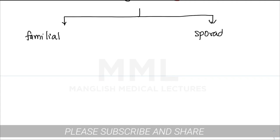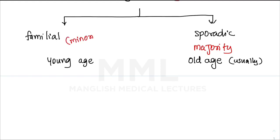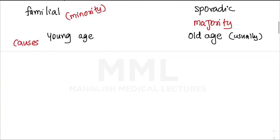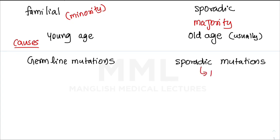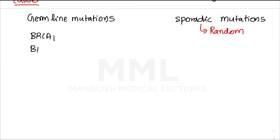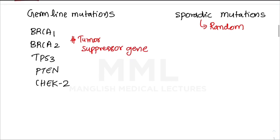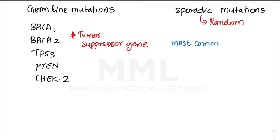The causes of breast cancer can be divided into two: familial and sporadic. Sporadic cases are the majority and usually present in older age, while familial cases present at a younger age and are a minority. Sporadic cases involve random mutations; familial cases involve germline mutations in genes such as BRCA1, BRCA2, P53, PTEN, and CHEK2 — all tumor suppressor genes. The most common sporadic mutation involves the P53 gene. Keep that in mind.